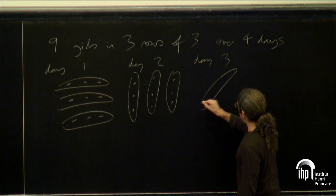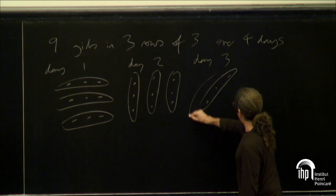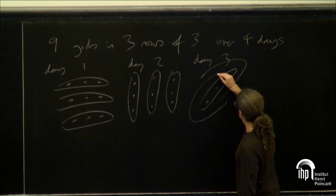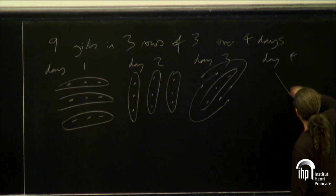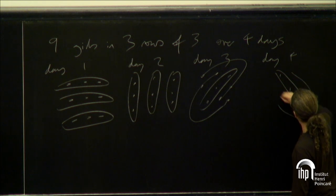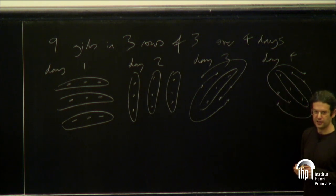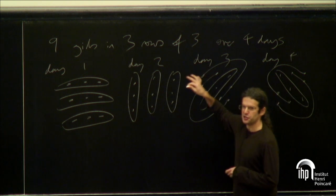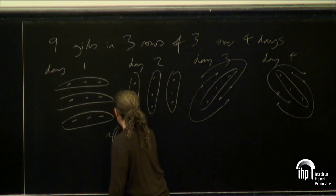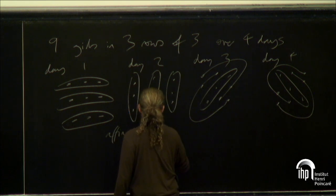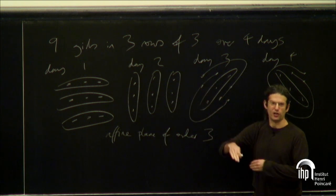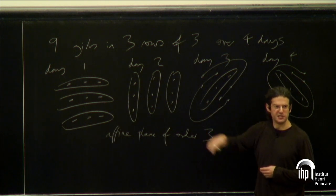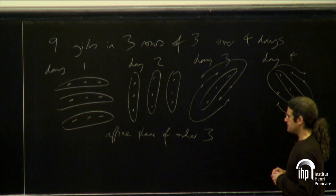I have some diagonal pairs to cover, so I'll do that, and then on day four I'll go in the other direction. You see that's a solution to the problem. What I've drawn here is a familiar geometric object — the affine plane of order three. I've exhibited a decomposition of it into parallel classes: lines which just cover every point exactly once.